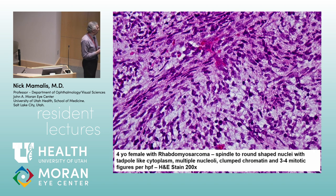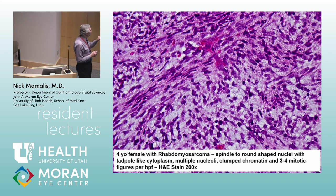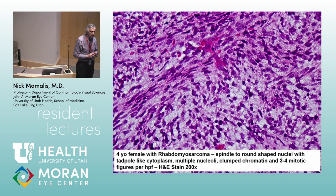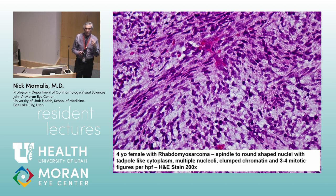Now the different types of rhabdomyosarcoma. What are the varieties we need to think about? Embryonal is the most common. Then there's the alveolar, which is the most aggressive. There's also a pleomorphic variety which is extremely rare. The two you really want to remember: embryonal — the most common — and alveolar — the most aggressive.